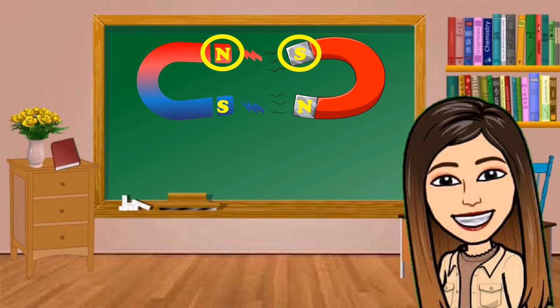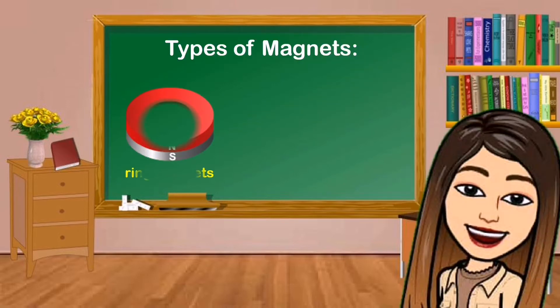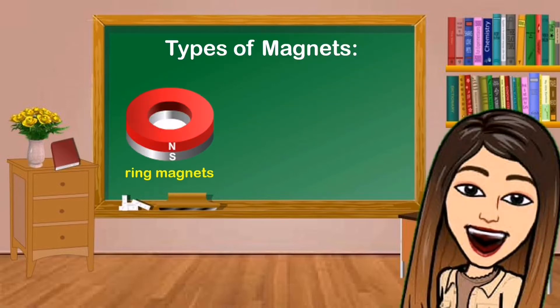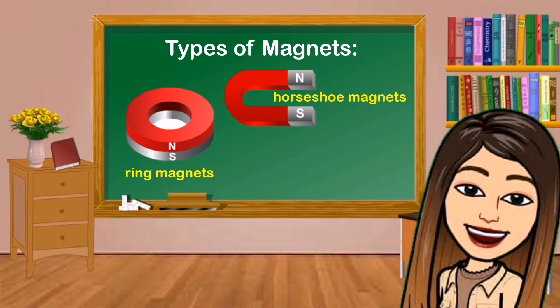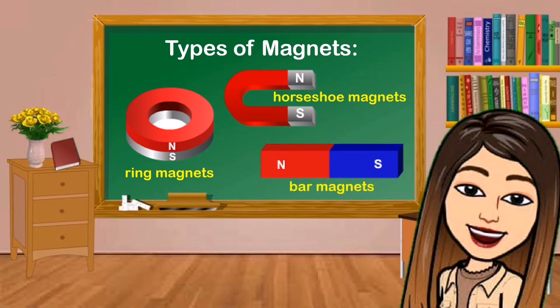Magnets are attracted to three types of metals. These metals are made of nickel, iron, and cobalt. There are several types of magnets like ring magnet, horseshoe magnet, bar magnet, or rectangular magnet.